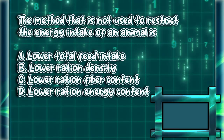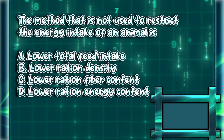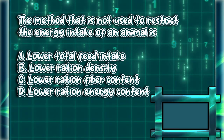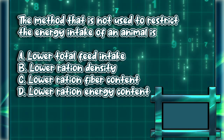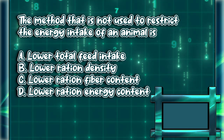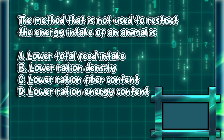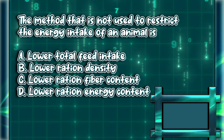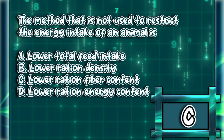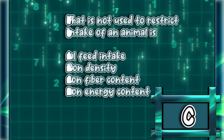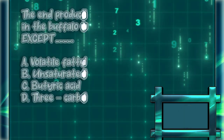The method that is NOT used to restrict the energy intake of an animal is: A) Lower total feed intake, B) Lower ration density, C) Lower ration fiber content, D) Lower ration energy content. The answer is letter C.